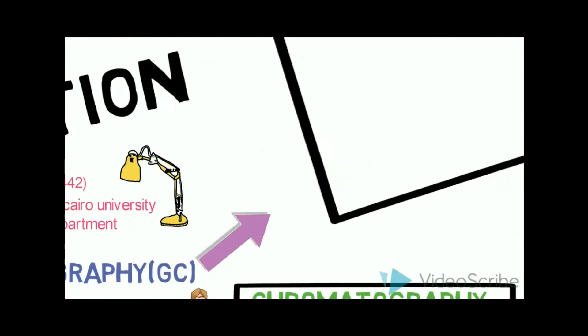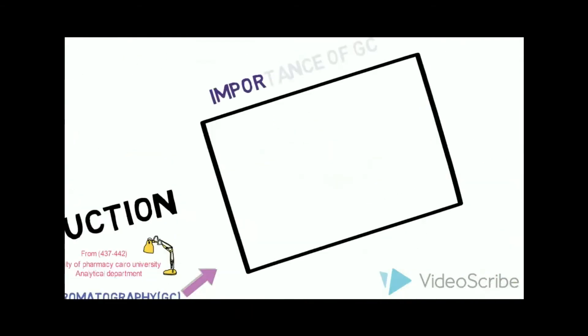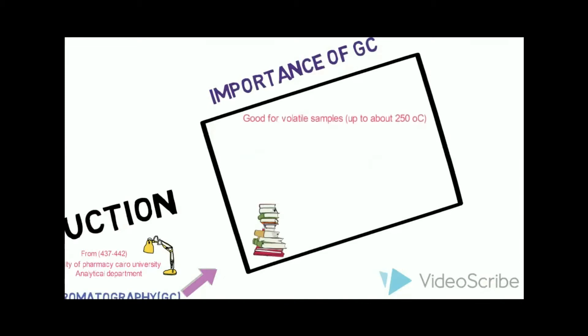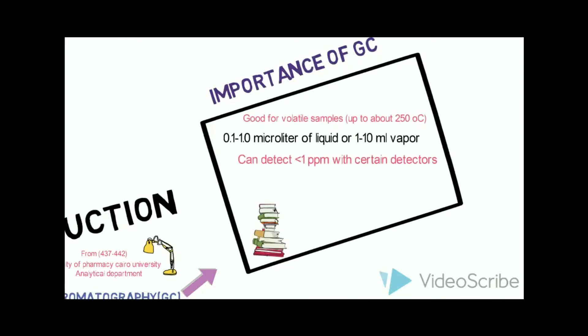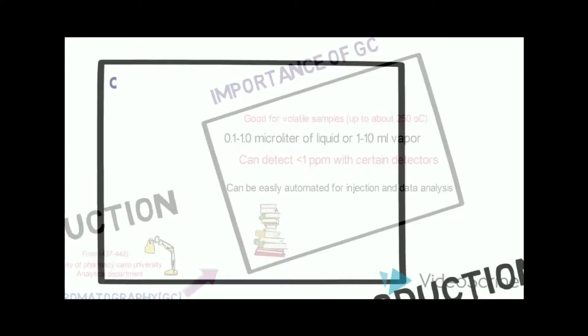What is the importance of GC? It is good for volatile samples — 0.1 to 1 microliter of liquid and 1 to 10 mLs vapor. It can also detect less than 1 ppm with certain detectors, and it is easily automated for injection and data analysis.